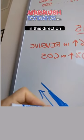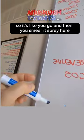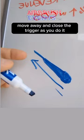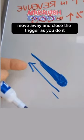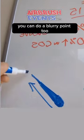So it's like you spray here, move away, and close your trigger as you do it, and it should end up with a fine point. You can do a blurry point too.